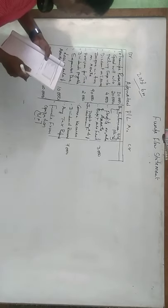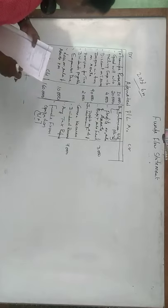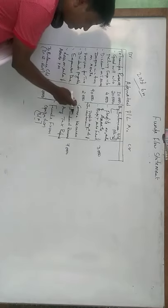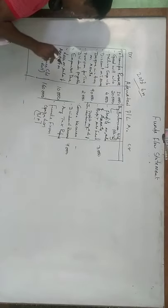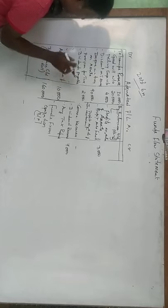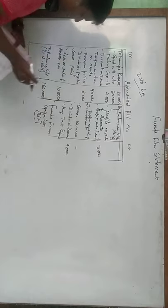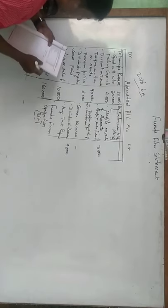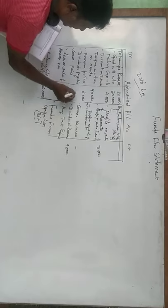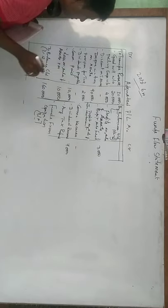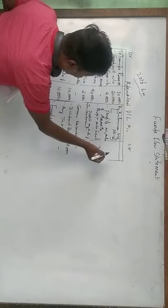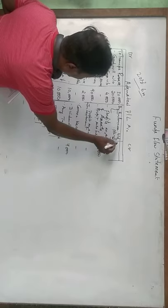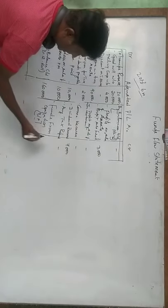Commission paid on non-trading activity — in the earlier problem we had commission received as income, but here it is an expense. So I will write commission paid on non-trading activity — it is an expense of 10,000 rupees. Dividend payable, discount on issue, tax refund, profit on sale of investment, and opening balance of profit and loss account are not given here.